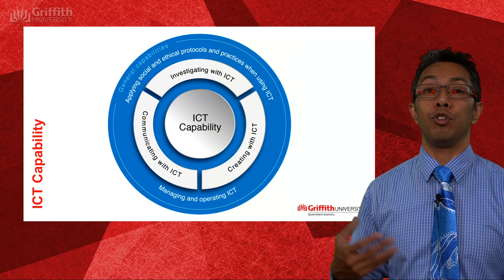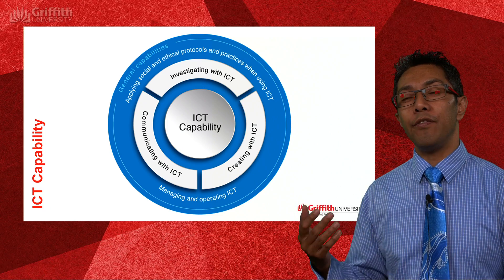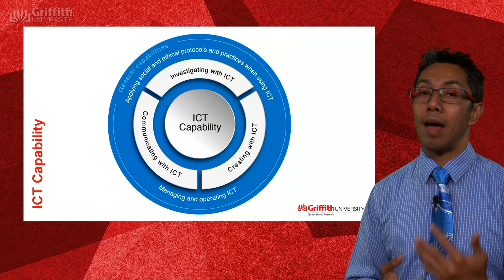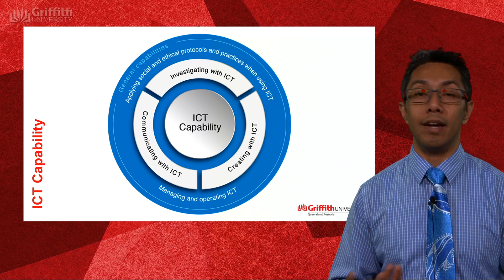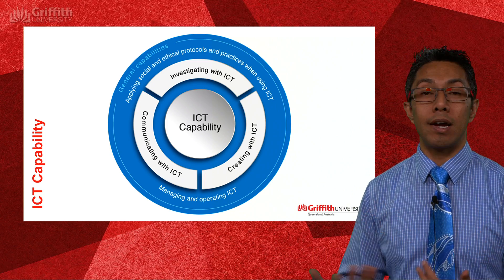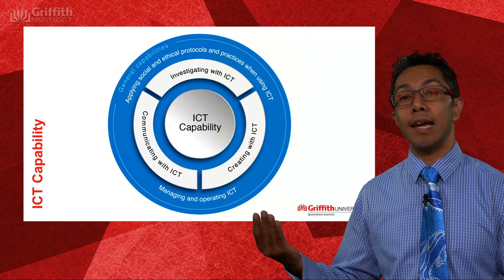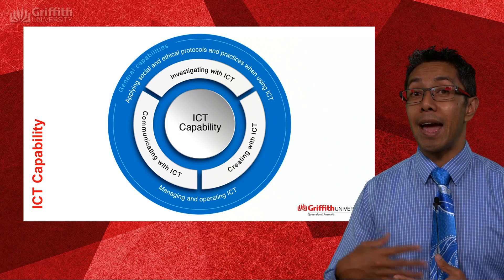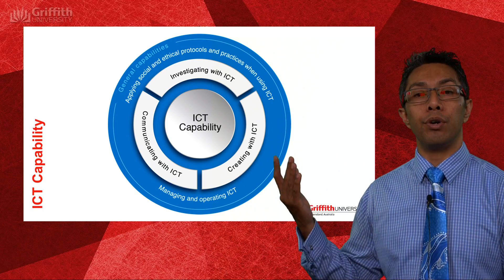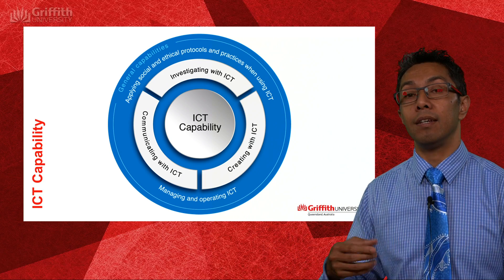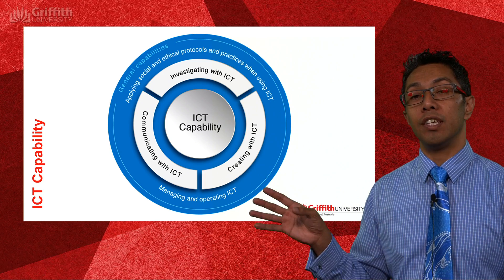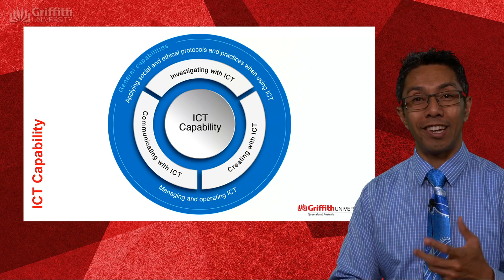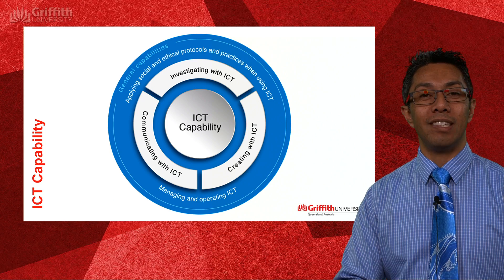The next capability is ICT — using computers and modern technology not only for communicating but also for creating. We want students to be able to create PowerPoints, websites, and interactive animations. There is communicating with ICT — email, synchronous and asynchronous collaboration — but also using ICT as a research skill. This capability has three elements, all of which you can probably think of ways we develop in science.